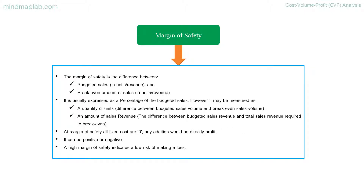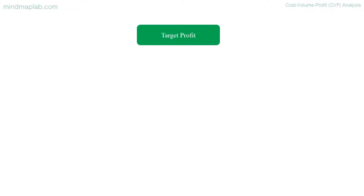At the margin of safety, all fixed costs are covered and any additional sales would be directly profit. The margin of safety can be positive or negative. A high margin of safety indicates a low risk of making a loss.